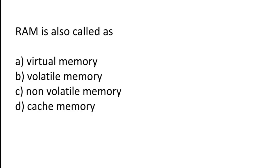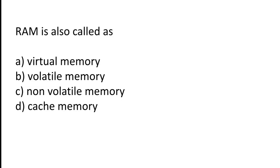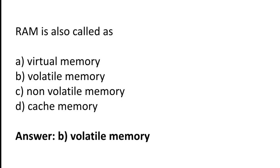RAM is also called as: Virtual memory, Volatile memory, Non-volatile memory, Caching memory. The correct answer is option B — RAM is also called as volatile memory.